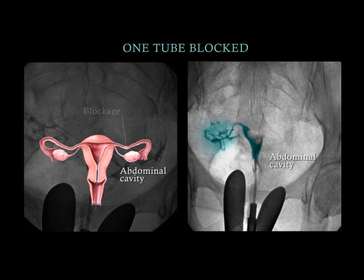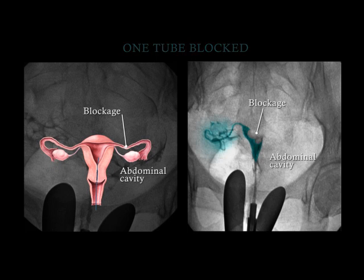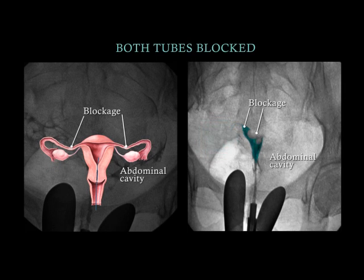If one fallopian tube is blocked, the dye will not spill out into the abdominal cavity on that side of the patient. In some cases, blockage can occur in both fallopian tubes. Notice that the dye will remain within the endometrial cavity.